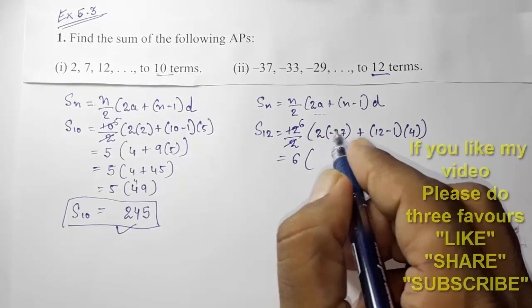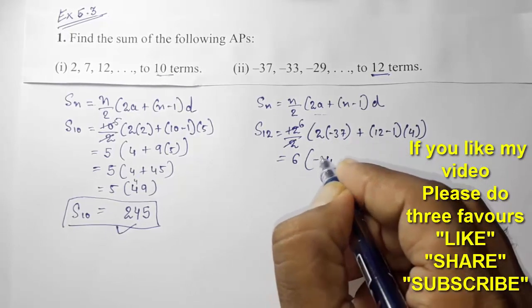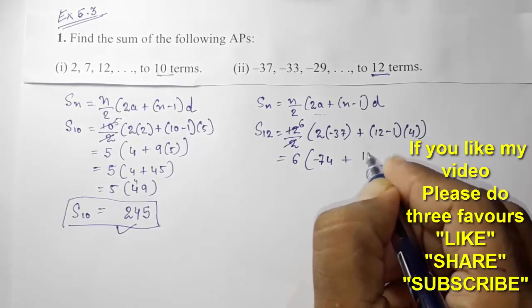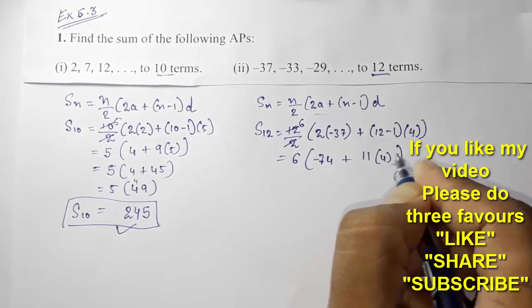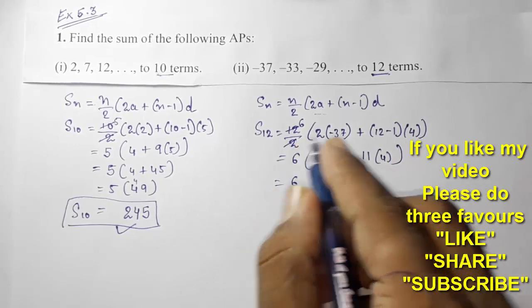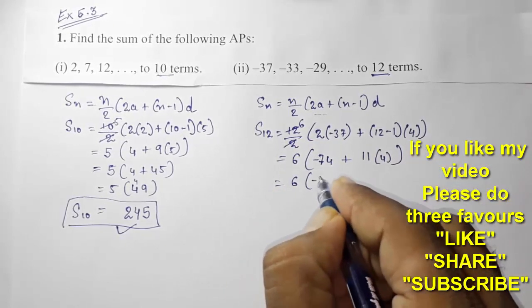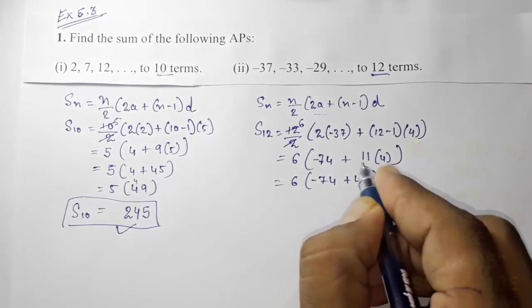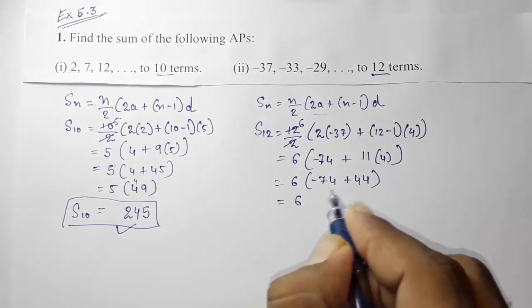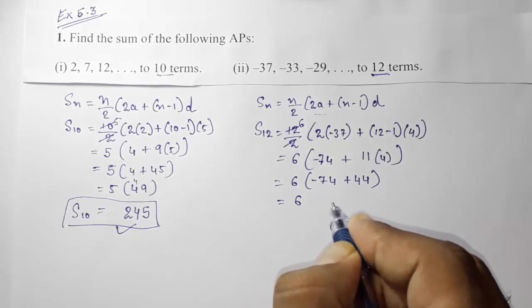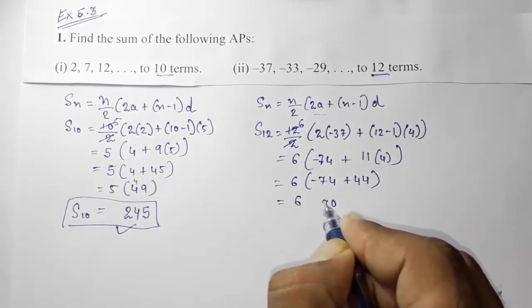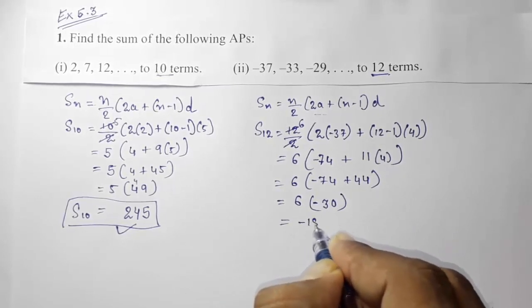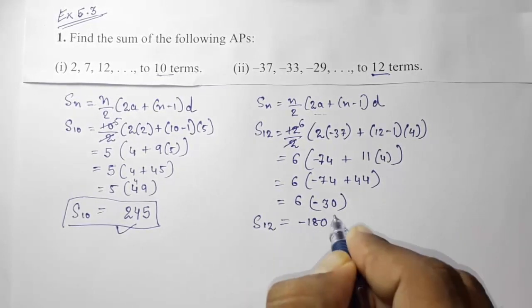After cancellation, 12/2 = 6. So S12 = 6 × (2×(−37) + 11×4) = 6 × (−74 + 44) = 6 × (−30) = −180. The sum of 12 terms is −180.